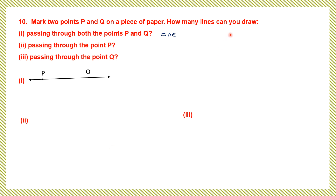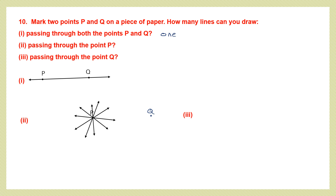How many lines can you draw passing through the point P alone? If we have point P, we can draw many lines through it — one, then another, then another, and so many more. So the answer to this question is infinite, or many many lines.